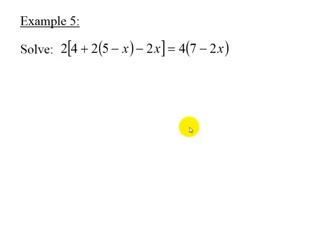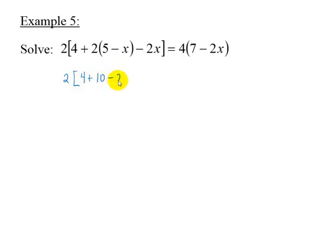Consider the equation 2 times the quantity 4 plus 2 times 5 minus x, minus 2x, is equal to 4 times 7 minus 2x. We simplify inside the grouping symbol to get 2 times the quantity 4 plus 10 minus 2x, minus 2x, is equal to 28 minus 8x.